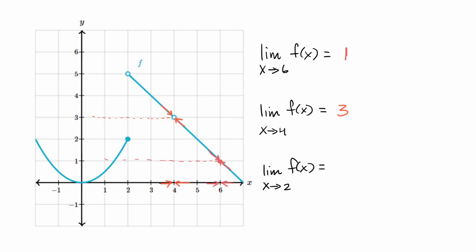Now let's think about the limit as x approaches two. This is interesting — the function is defined there; f of two is two. But when we approach from the left-hand side, it looks like our function is approaching the value of two. But when we approach from the right-hand side, our function is getting closer and closer to five. As we go from 2.1, 2.01, 2.0001, it looks like the value of our function is getting closer and closer to five.